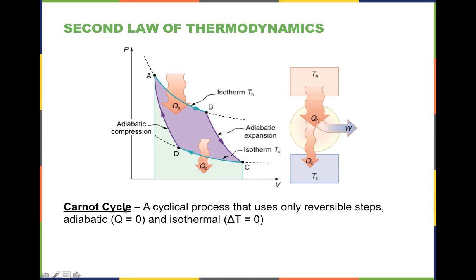In this sort of process we can talk about something called a Carnot cycle. A Carnot cycle is a cyclical process that uses only reversible steps — an adiabatic step where no heat is transferred, and an isothermal step where no temperature change occurs — in order to perform work. Here's the isothermal step, an adiabatic step, another isothermal step, another adiabatic step, and then it repeats. On this side, heat is transferred from the hot reservoir and there's isothermal expansion.